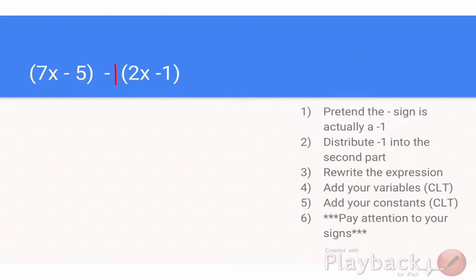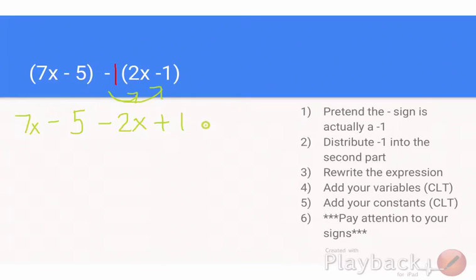Negative 1 times 2x is negative 2x. Negative 1 times negative 1 is positive 1. Then I just bring everything else down. Next it says rewrite the expression — we already rewrote it here; these are both the same exact thing. Some of you see the minus 5 and the minus 2x and like writing plus negative 5 plus negative 2x. You can do that if you want during this step.